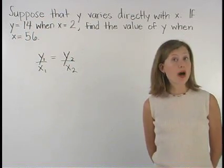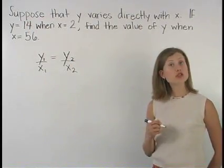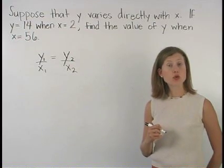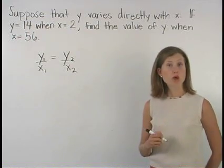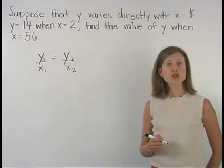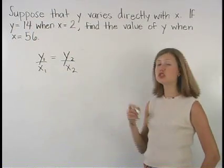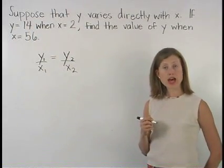Here, we know that Y varies directly with X. When we have two sets of directly related coordinates, X1 and Y1 and X2 and Y2, we can use the ratio Y1 over X1 equals Y2 over X2 to find a missing value.